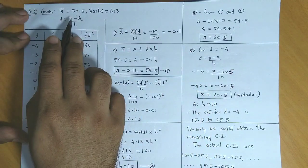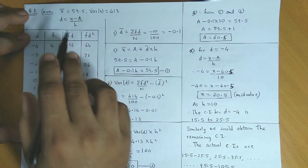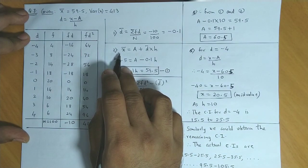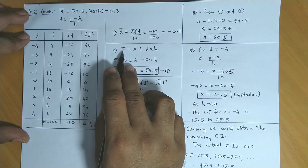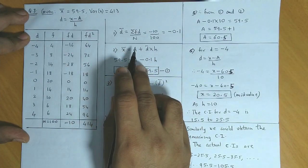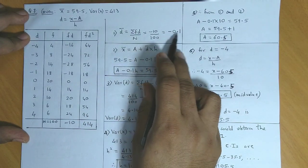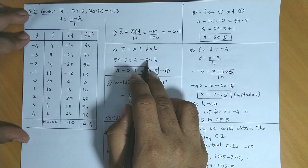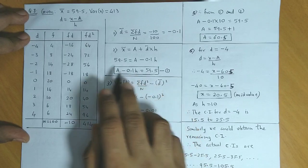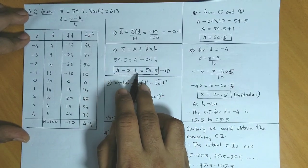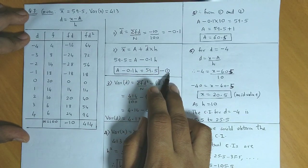Since we've used shift of origin x minus a and also change of scale divided by h, x̄ will be a plus d̄ times h. So x̄ is given as 59.5, we need to find the assumed mean, d̄ we've calculated as minus 0.1, times h. This gives us the first equation: a minus 0.1h equals 59.5. This is equation number 1.